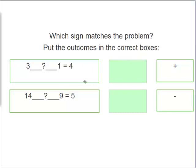Alright, let's figure out these problems. We have 3?1 equals 4 and 14?9 equals 5.